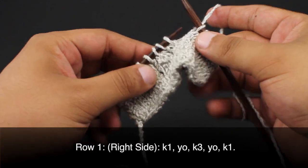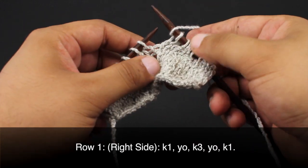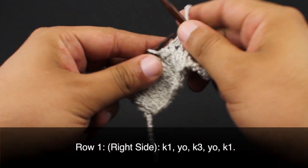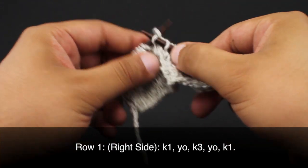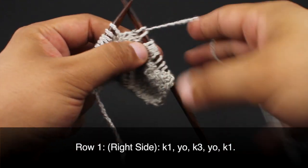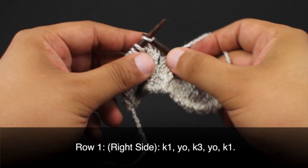Row one: Beginning on the right side of our work, we are going to knit one, then yarn over and knit three, then do another yarn over and finish up by knitting one.